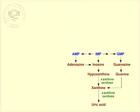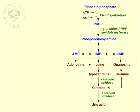In humans, uric acid is the end product of the breakdown of purine nucleotides. One of the pathways for their synthesis is the pathway de novo, in which the synthesis begins from ribose 5-phosphate.